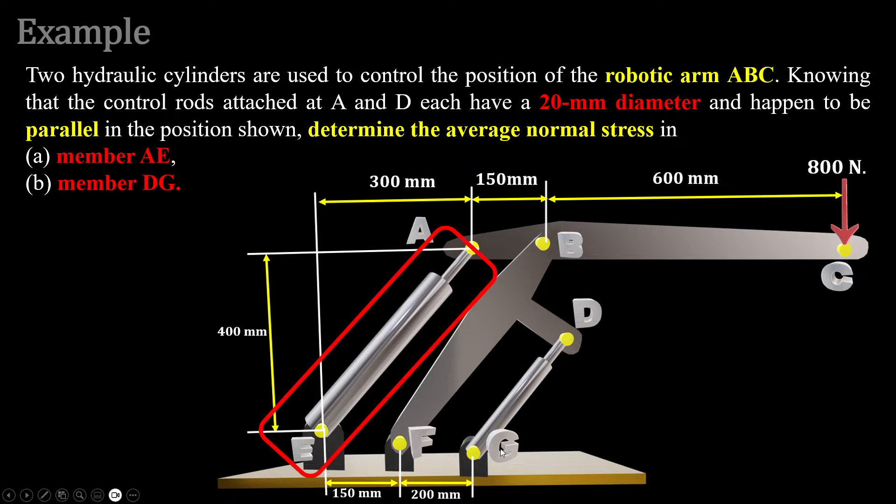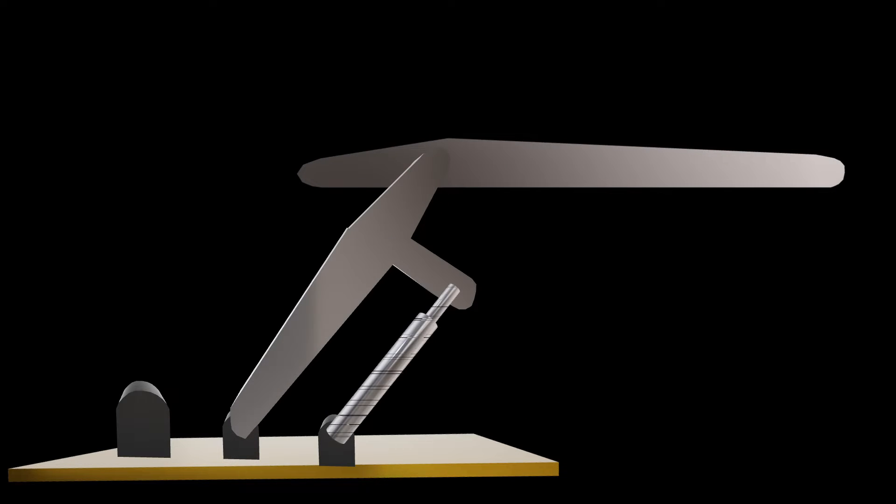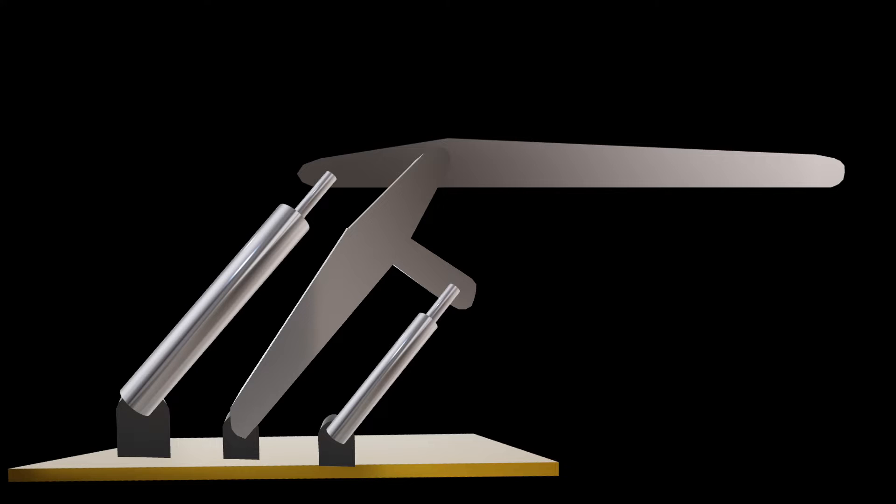So if these cylinders at the connection at A and D each have a diameter of 20 millimeters and they are parallel to each other, we want to know the average normal stress in member AE and also member DG.